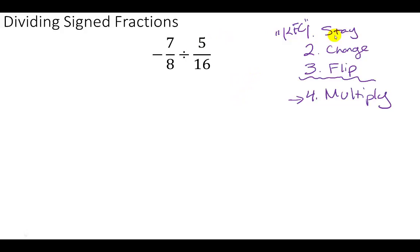Step 1 is stay. Our first fraction stays the same. I'm just going to bring it down: negative seven-eighths. Step 2, we're changing division into multiplication.